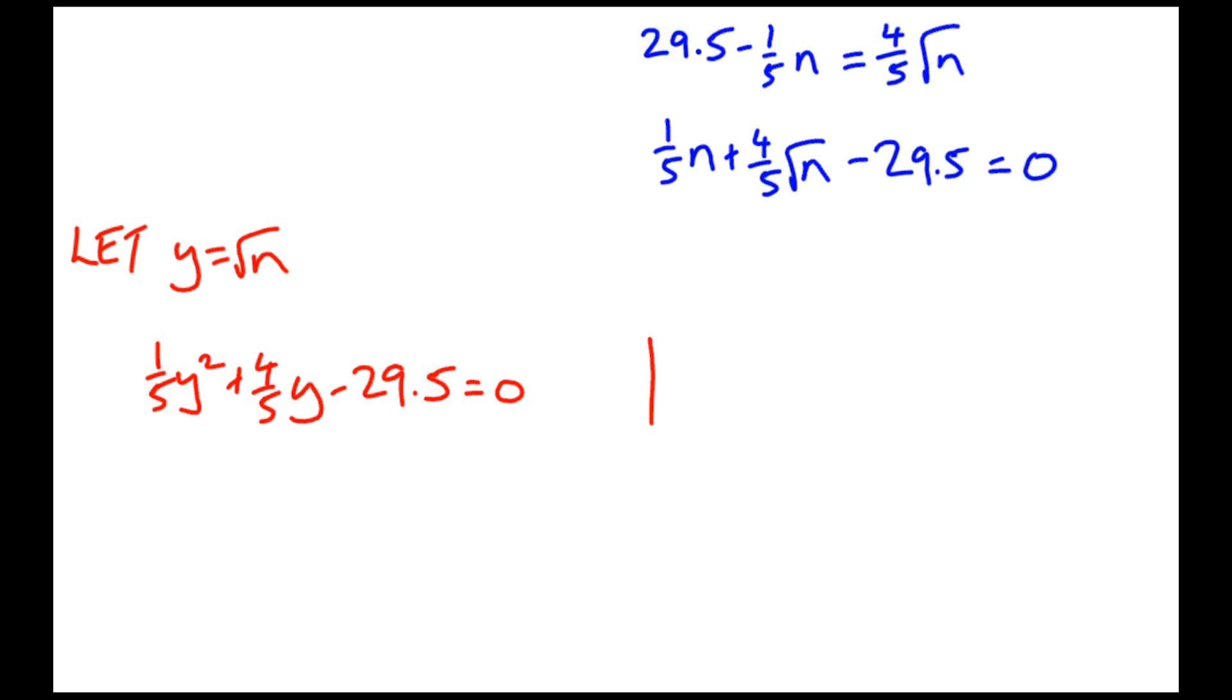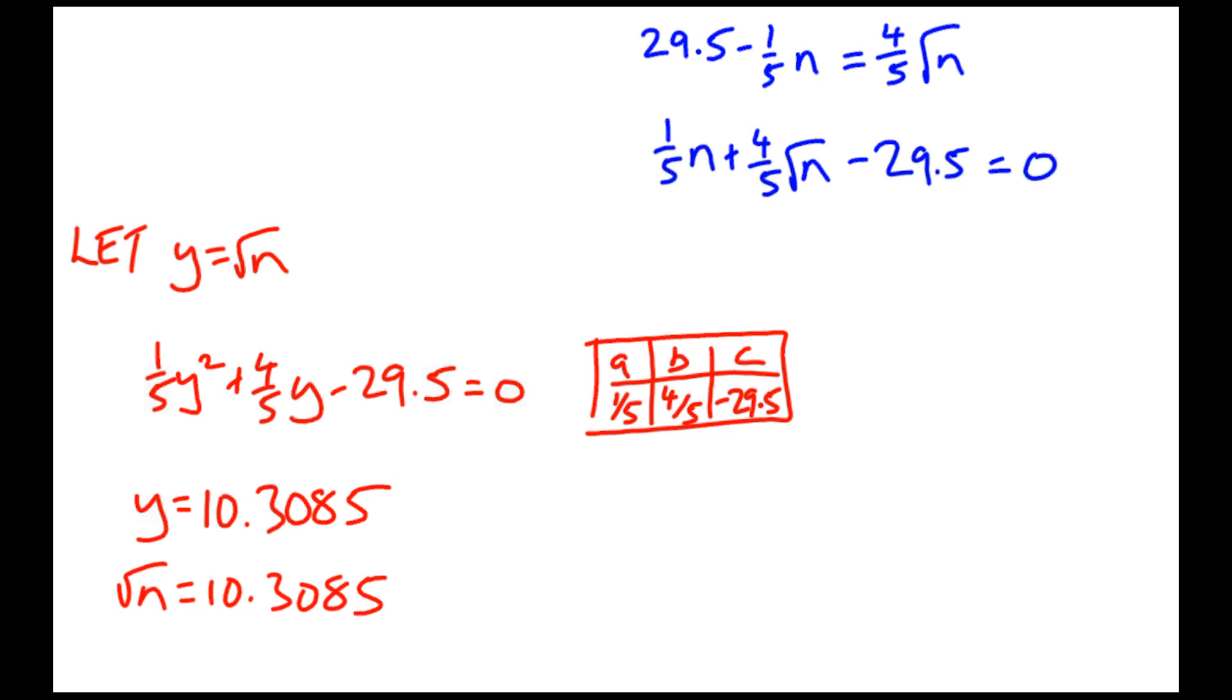Now my quadratic should become one-fifth of y squared plus four-fifths of y minus 29.5 equal to 0. This is what I want to solve. I'm going to quickly put it into the quadratic formula. I could rearrange and make it look a bit nicer, but I'm happy to put these values into the calculator. One-fifth, four-fifths, negative 29.5. All of that into the quadratic formula in the calculator should give us an answer of y equals 10.3085 in decimal form. I know that's the root of n, but I wanted to find what n equals, so squaring that gives me the answer, 106.2659 to four decimal places.